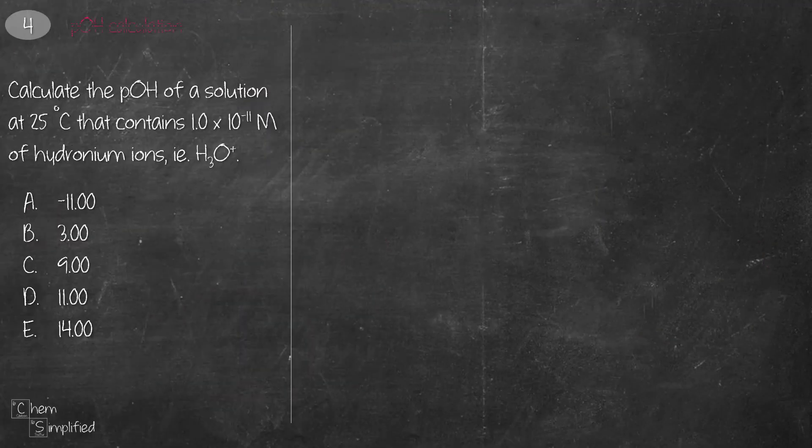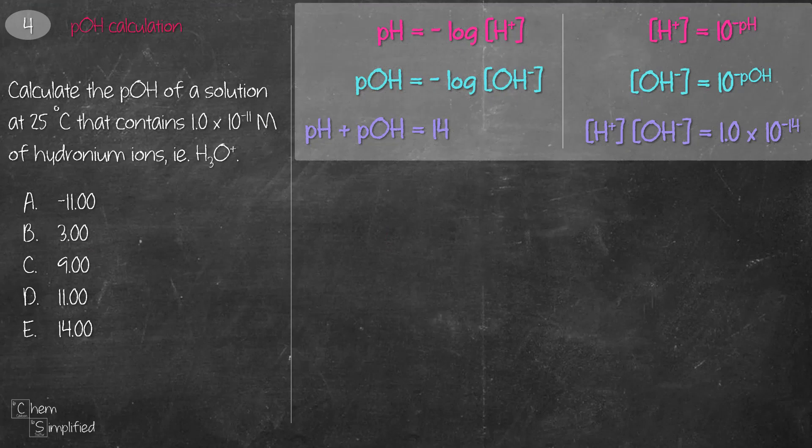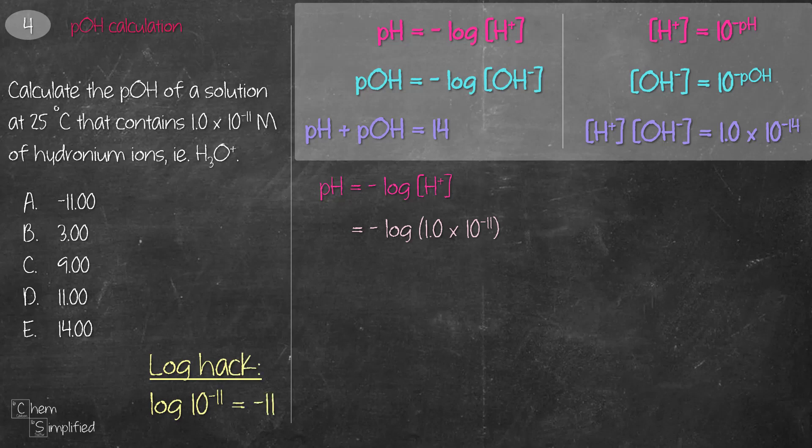This next question involves pOH calculation. These are the six equations again, and the question asks us to find pOH. However, we're started off with concentration of hydronium ion H3O+, which essentially is the same as H+. And therefore, we're going to start off with this first equation, where we're going to use the concentration that's given to calculate the pH. Log of 10 to the power of negative 11 is negative 11. And that gives us pH of 11. Once we found the pH, we can use a second equation to figure out the pOH.